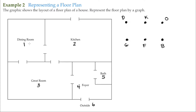I can get from the dining room into the kitchen, so I'll represent that with an edge. I could also get from the dining room into the great room, so we'll do an edge there. I can get from the great room into the kitchen, so we'll put an edge there, and from the great room into the foyer. For the kitchen, I can also get to the outside — that's what this opening is here — so we'll put an edge right there.